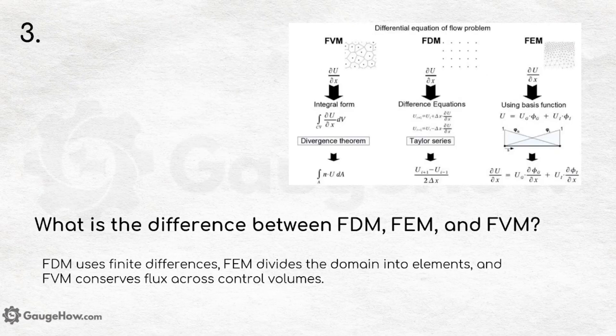What is the difference between FDM, FEM and FVM? FDM uses finite differences, FEM divides the domain into elements, and FVM conserves flux across control volumes. FDM stands for Finite Difference Method, FEM for Finite Element Method, and FVM for Finite Volume Method.